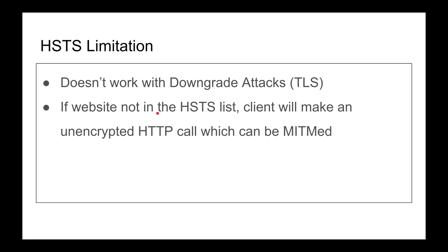To mitigate downgrade attacks, you need to configure your server — for example in HAProxy — to only support strong ciphers like ephemeral Diffie-Hellman for perfect forward secrecy. That's something you handle at the server level, not through HSTS. Another limitation: if your website is not in the HSTS preload list and a client visits for the very first time, that first HTTP call can be intercepted.